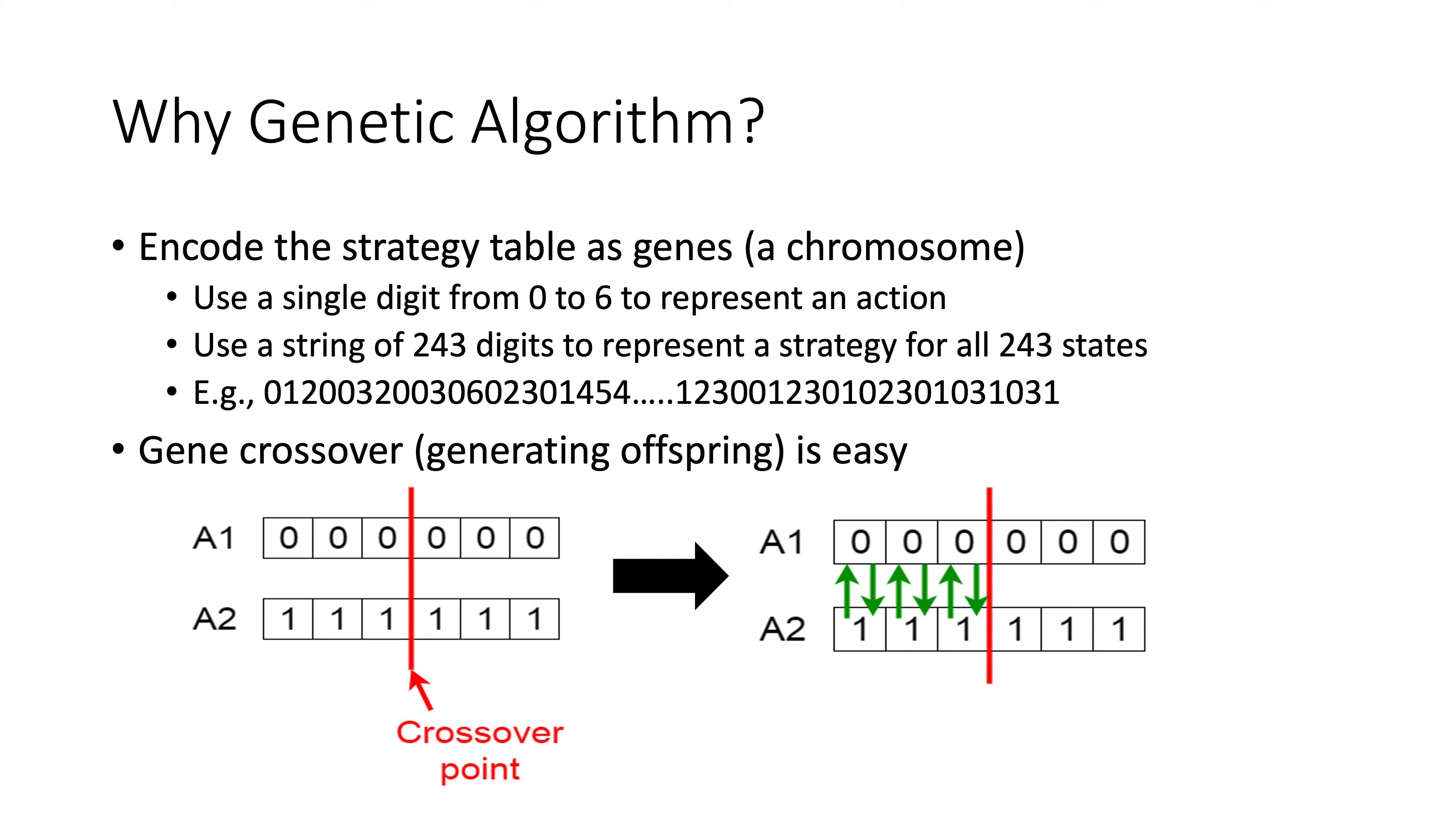The second reason is that crossover is easy on two chromosomes. We could generate a child by combining genes from two parents and we expect their offspring have similar traits as their parents.